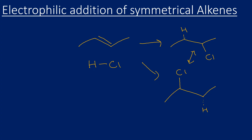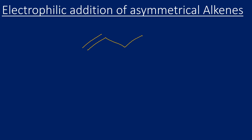It's a very different story with an asymmetrical alkene. I've drawn but-1-ene, and this time if I react it with HCl, I'm going to get two possible products: either 2-chlorobutane or 1-chlorobutane. One of these will be the major product and one will be the minor product. The best way to show this is to go through the mechanism.